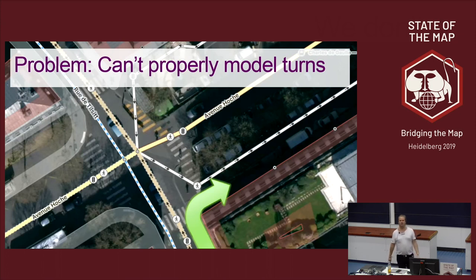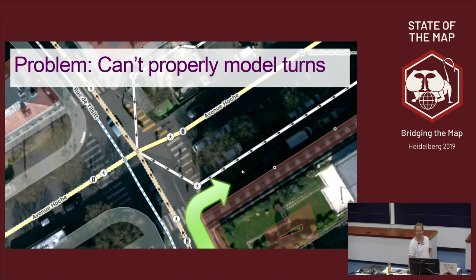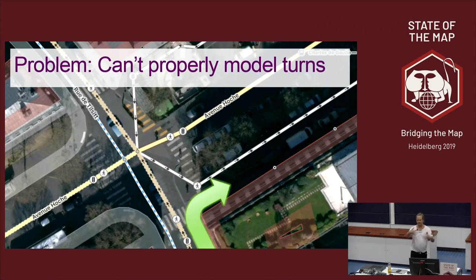We can't properly model turns either. If you imagine you're cycling from here along this road, the router says: turn right, turn right, turn left. What does the cyclist actually do? They just meander around that corner. Because we've got all the points coming into a single place — which correctly gives us connectivity and a route — we can't give sensible instructions. Do we add a fake bit of bike route there that doesn't exist? What do we do?